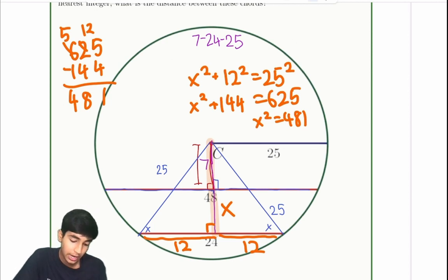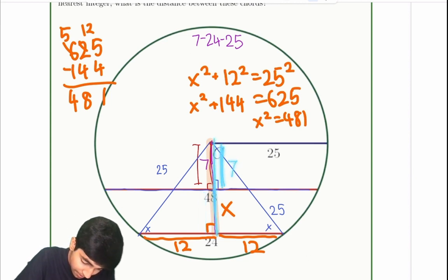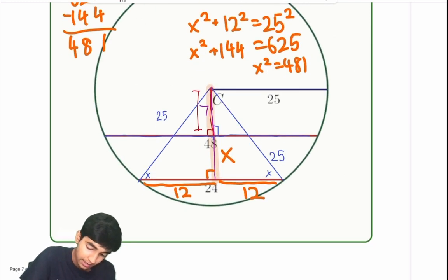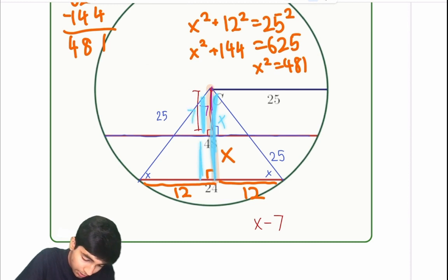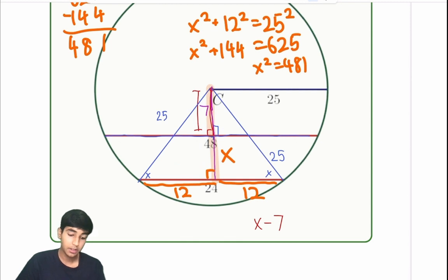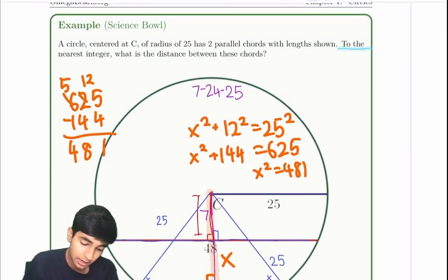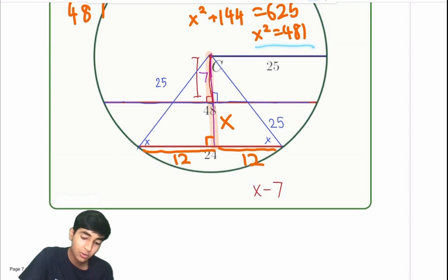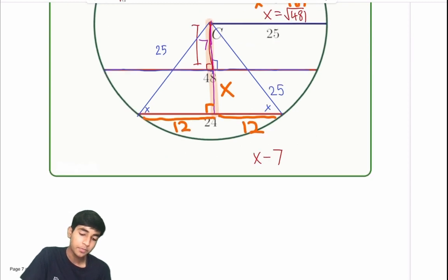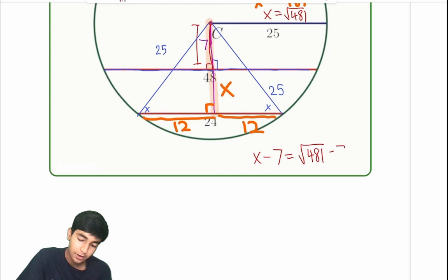So what are we essentially trying to find? We're trying to find this distance between, right? This whole distance is x, and then this part over here is 7. So to find the distance over here, that's just x minus 7. Because the whole thing from here to here is x, and then the top part is just 7. So to get the bottom part, we just do x minus 7. So that's the distance between the chords. But the thing is, we're not trying to solve exactly. It says to the nearest integer. So we're just trying to do, well, if x squared is 481, x cannot be negative. So x is just square root 481. So x minus 7 is square root 481 minus 7. And now we just have to find this to the nearest integer. This is the distance.